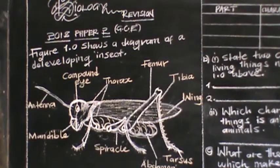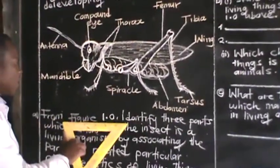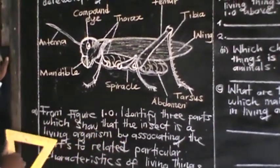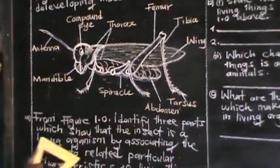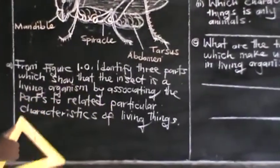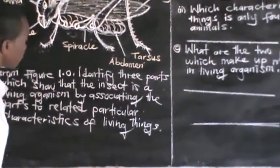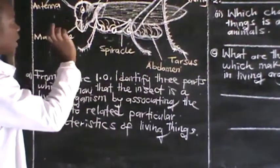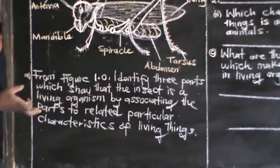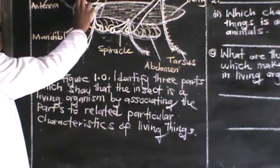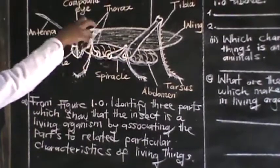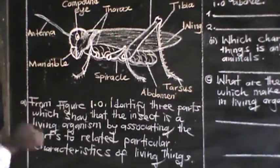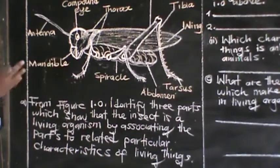Then we are saying, from the figure above, which is figure 1.0, identify three parts which show that the insect is a living organism, by associating the parts to related particular characteristics of living organisms. So they want us to identify any three parts and identify the characteristics of living organisms which show that this organism is a living organism.